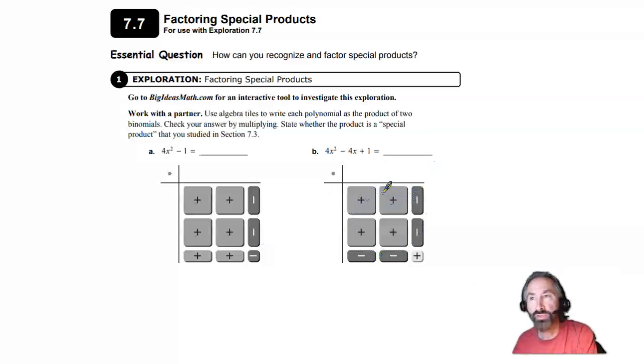Again, they filled it in for you and they gave you the 4x squared minus 4x plus 1. Let's see how this one looks.